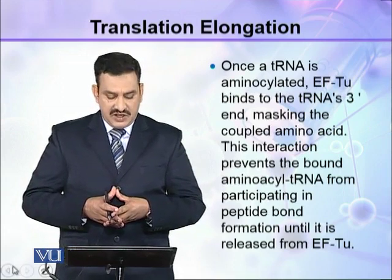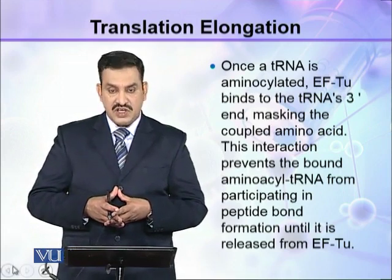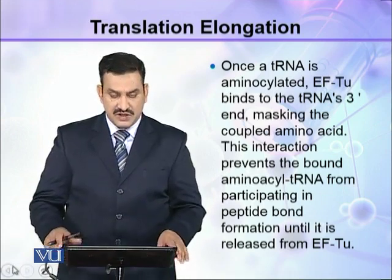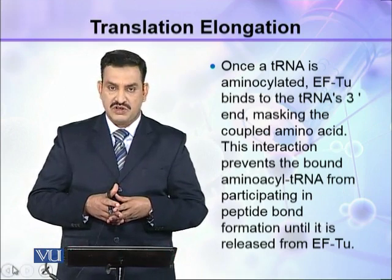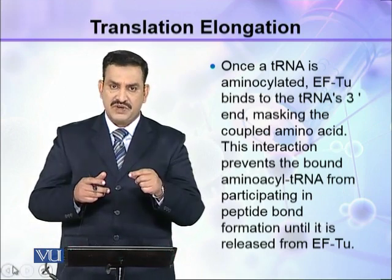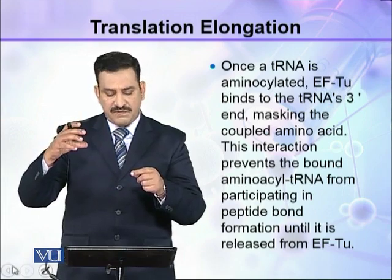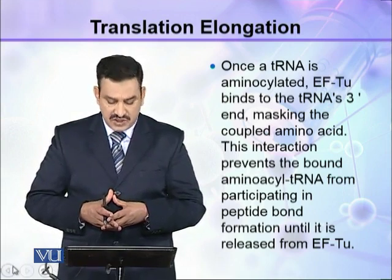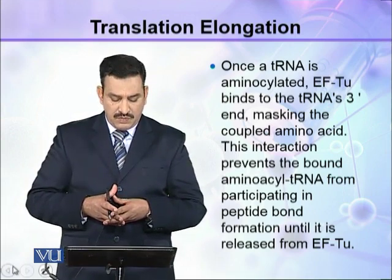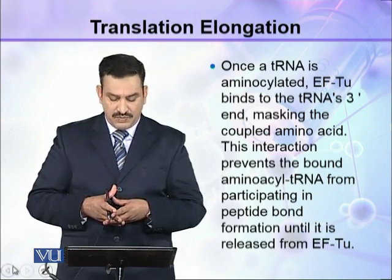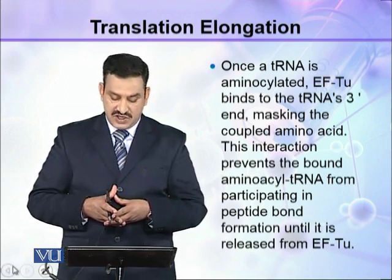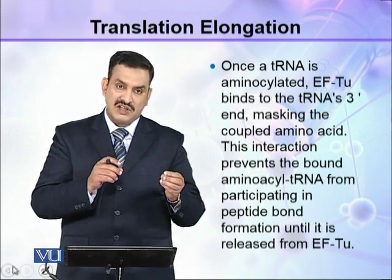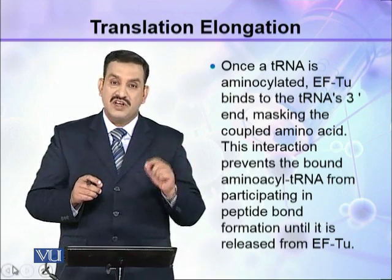Once a tRNA is aminoacylated, EF-Tu binds to the tRNA's three-prime end, masking the coupled amino acid — because the amino acid is joined at the three-prime end, and EF-Tu binds there and masks it. This interaction prevents the bound aminoacyl tRNA from participating in peptide bond formation until it is released from EF-Tu. Bond formation will not occur as long as EF-Tu does not release it.